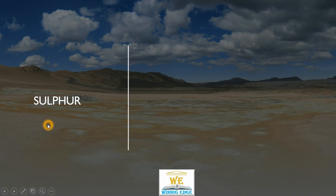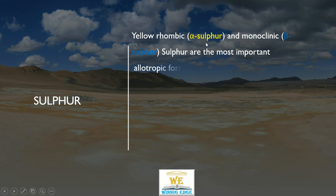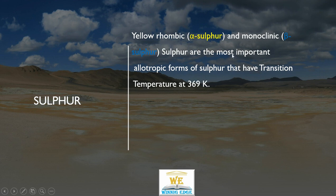Sulphur. Yellow Sulphur, which is also known as Alpha Sulphur, and Monoclinic Sulphur or Beta Sulphur are the most important allotropic forms of Sulphur. They have a transition point, meaning they keep on converting into one another at 369K.